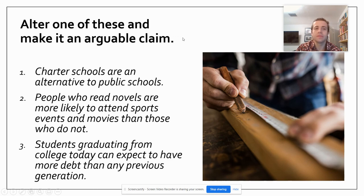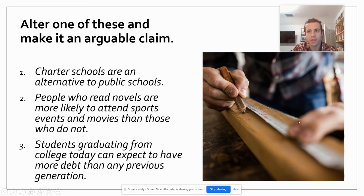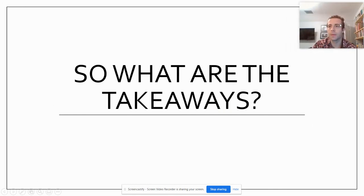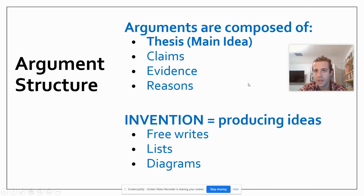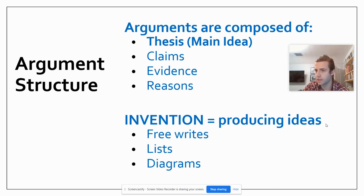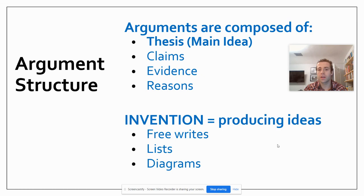So I want you to take one of these claims and see if you can rewrite it to make it a more arguable claim as practice. Go ahead and pause the video and give that a shot, just as an attempt to start working on these theses. All right — our big takeaways: we're starting to look at arguments and how they're composed. When we get done with brainstorming and planning, we need a solid thesis. We should be working towards: what's my main idea and what ideas could I use to back that up? We're going to go through this invention process — actively producing ideas through free writing, making lists, or doing diagrams like brainstorms or word webs. We've got to go get those ideas. Good luck in your writing process.